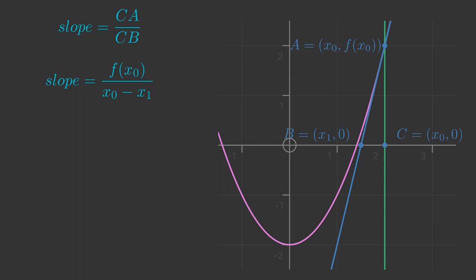So the slope of the line CA over CB is f(x0) divided by (x0 minus x1). But there is a second way to calculate the slope at A. It is the first derivative of the function f, which we will write as f'(x0). Since x is equal to x0 at point A, the slope at that point is f'(x0). We now have two ways to calculate the slope at point A. Since they both calculate the same value we can set them equal. This gives us f(x0) over (x0 minus x1) equals f'(x0).